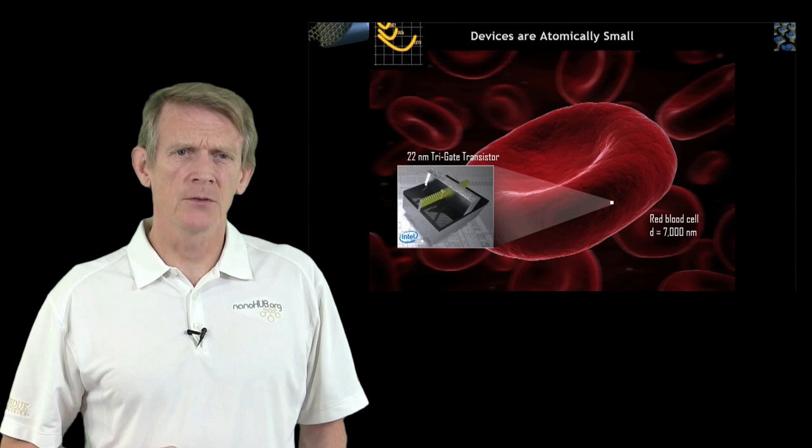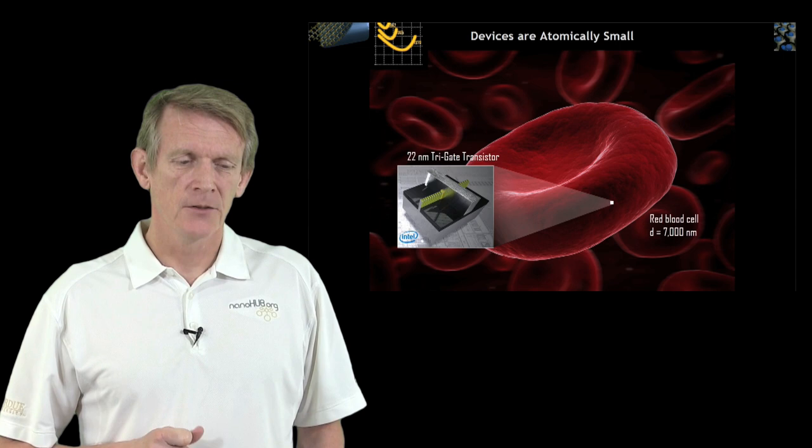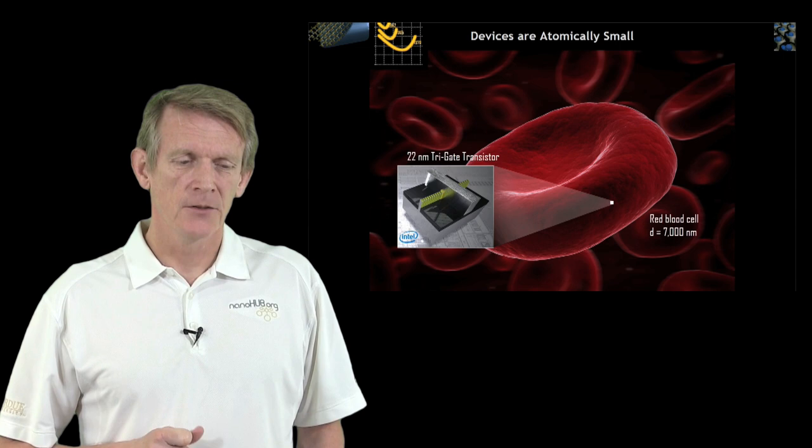That's the punchline of this slide. They are so small that you can compare them, for example, to a red blood cell, which is ballpark 7,000 nanometers large. So dramatically smaller than this biological object that you are aware of.